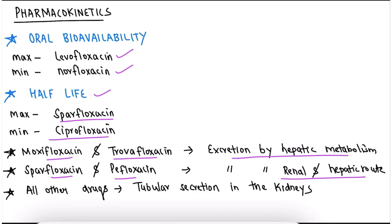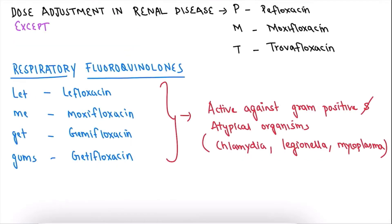To summarize: maximum oral bioavailability is levofloxacin, maximum half-life is sparfloxacin, and sparfloxacin plus pefloxacin are excreted by both renal and hepatic routes. Regarding dose adjustment in renal disease, we must adjust the dose for all fluoroquinolones except pefloxacin, moxifloxacin, and trovafloxacin, because these three have hepatic excretion.